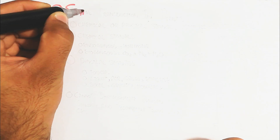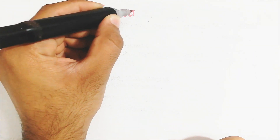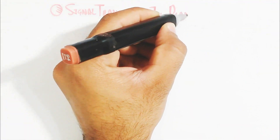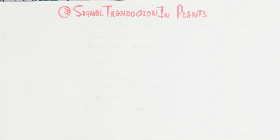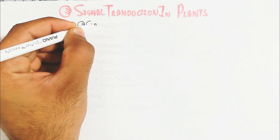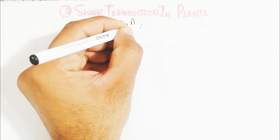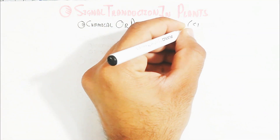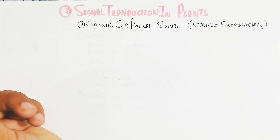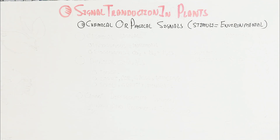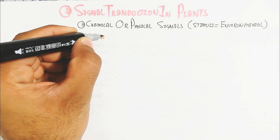In this video we will understand about signal transduction in plants — how signals can be transduced. A chemical or physical signal is a stimulus from environmental factors that can change the physiology of the plant. It can be of two types: chemical signal or physical signal.